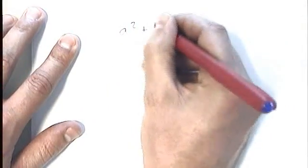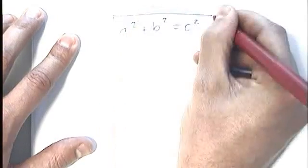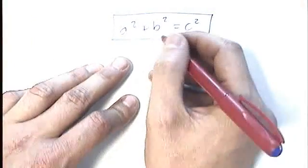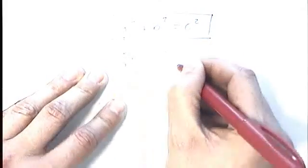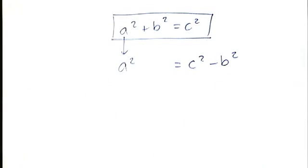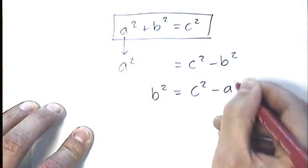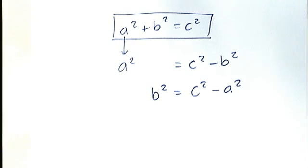Finally, if you use the formula a² + b² = c², where c is the hypotenuse, you can rearrange algebraically. If you're finding a², that equals c² − b². If you're finding b², that equals c² − a². If you're confident with rearranging formulae, the algebraic approach can be quicker and is an advantage.